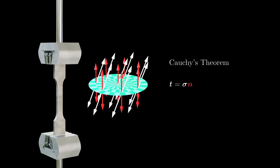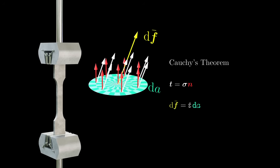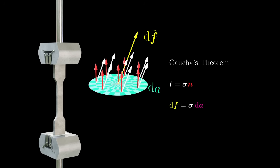Cauchy's formula tells us the traction acting on an area element. Once we know the traction, we can also compute the total force acting on that element. Let's denote the area of the infinitesimal area element by dA. The total force dF acting on this element is then the traction t times the area dA, or sigma times n times dA. The quantity n times dA — which we denote by dA in bold — completely describes both the orientation and the size of the element. Therefore, the force acting on an area element is simply the stress tensor sigma times the area element vector dA, generalizing the undergraduate mechanics idea that force equals stress times area.